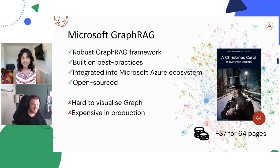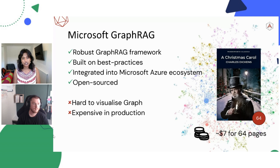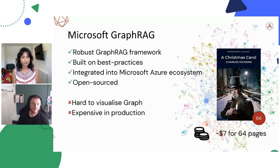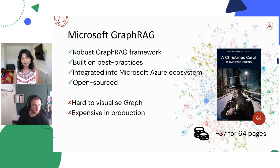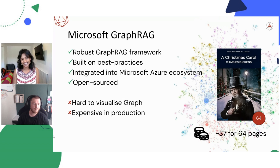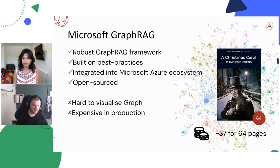Opinion time. Episode 3 was all about LlamaIndex and Microsoft GraphRAG. What was it good at, what were the benefits, and what were the drawbacks in terms of implementing GraphRAG? The integration within the Microsoft Azure ecosystem with the Solution Accelerator is a big selling point. When it becomes a little bit more mature, getting that deployed into the cloud is going to be powerful. But then you've got the counter arguments — expensive in production, and the graph is hard to visualize, though it's changing.